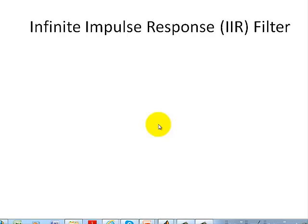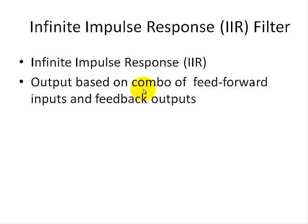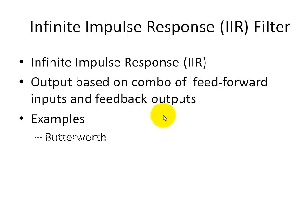Let me just give you a quick info on the infinite impulse response, which I'll discuss in more detail in future videos. Unlike the FIR filter, which has a finite length impulse response, the IIR filter could have an infinite impulse response. Its output consists of a combination of feedforward inputs and feedback outputs — you're taking the output and feeding it back as part of the input along with the signal input. Examples of IIR filters include the Butterworth, the Chebyshev, and the elliptic filters, which I'll discuss in future videos.